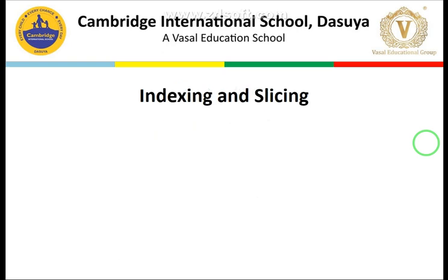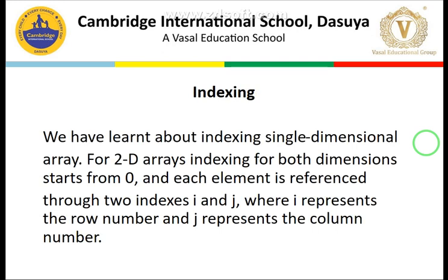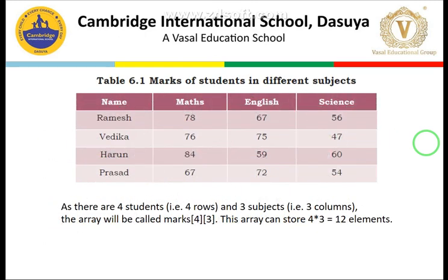Students, last session we covered indexing and slicing. We learned about indexing in a single dimension, as I showed in the last example. For 2D arrays, we have basically two dimensions: rows and columns. They are represented by i and j, where i represents the row number and j represents the column number.